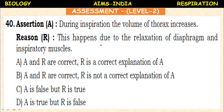Next question. Assertion — during inspiration, the volume of the thorax increases. Reason — this happens due to relaxation of the diaphragm and inspiratory muscles. Let us check: during inspiration, the diaphragm comes down and the thoracic cavity increases. The reason given states relaxation of the diaphragm, but when the diaphragm relaxes, the thoracic cavity decreases. So assertion A is true and reason R is false.